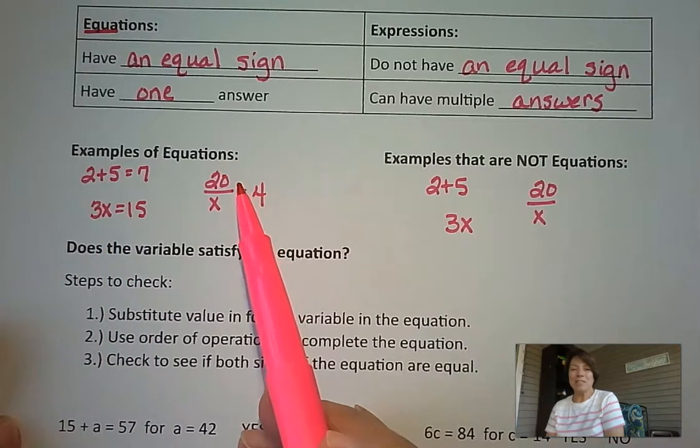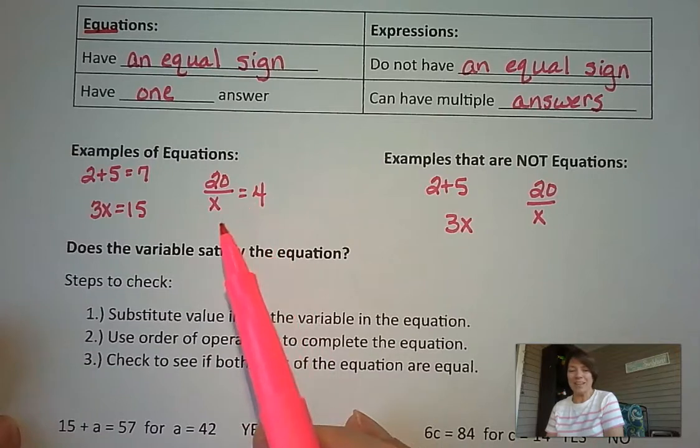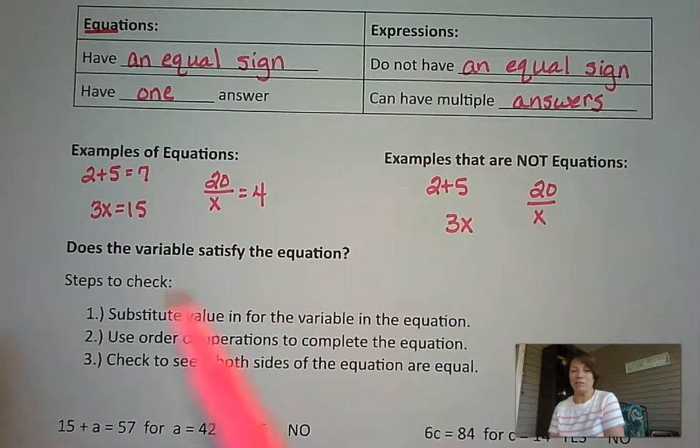And then over here, 20 divided by x equals 4. Again, an equation because it has an equal sign. And there's really only one value we can substitute in for this x to make this true, and that would be a 5. 20 divided by 5 is 4.